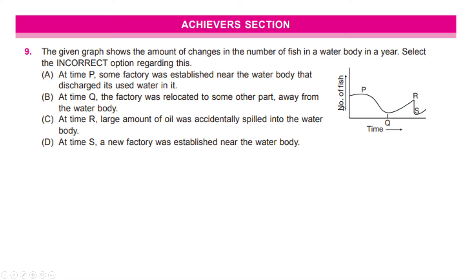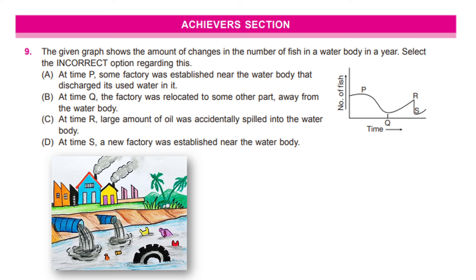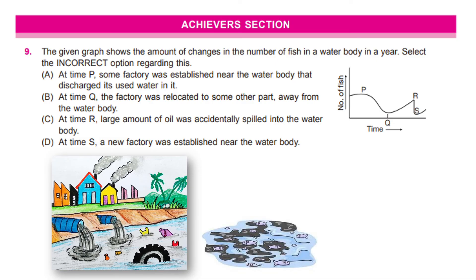Now, let us read our first option. It says at time P, which is here, some factory was established near the water body that discharged its used water in it. Now, if it is discharging its used water, well, the fishes will die. So, the number of fishes should go down, which is not the case here. So, A is not the right option.